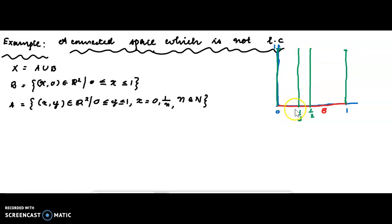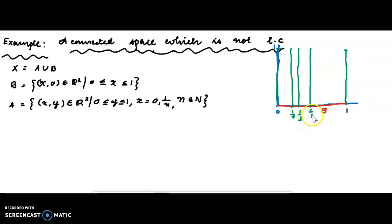At x equal to 1/4, similarly y varies from 0 to 1. Continuing the pattern, we get vertical segments at x = 1/2, 1/3, 1/4, and so on.